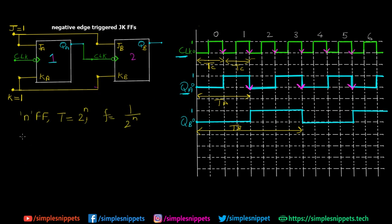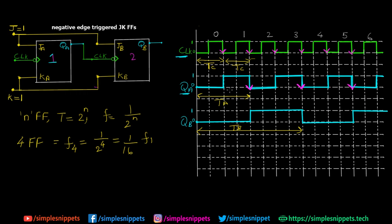For example, with four flip-flops where J and K are common and each flip-flop's clock is the output of the previous one, the circuit acts as both an asynchronous counter and a frequency divider. The frequency of the last flip-flop F4 = FC / 2^4 = FC / 16, and the time period is 16 times that of the clock. This is also how it performs frequency division.